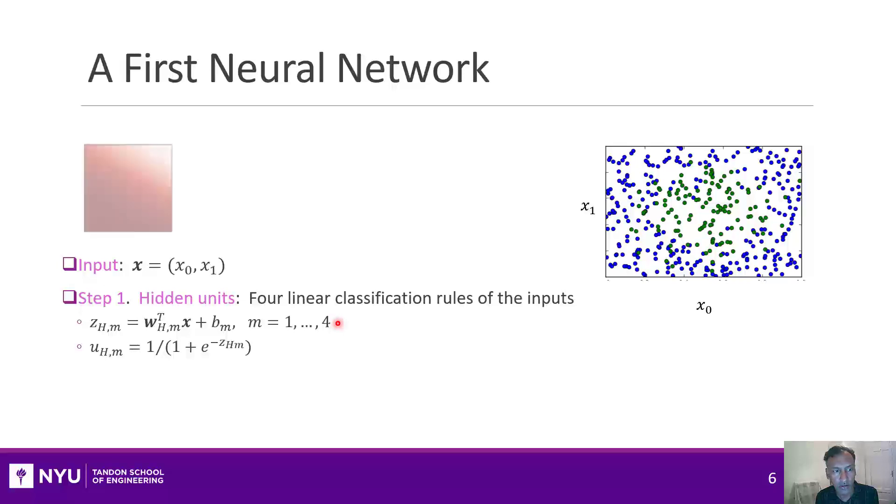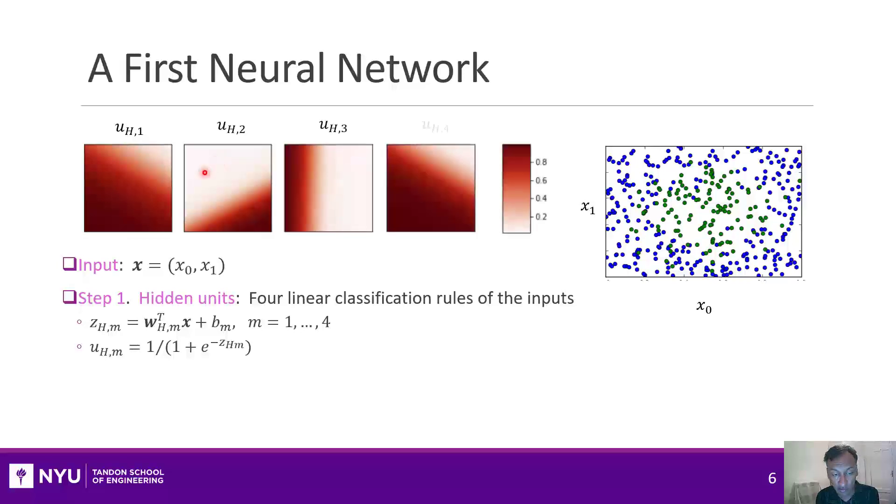What would this output look like? Well the first one could look like this, and you can see it's a value going from zero to one and it progresses along this linear region as we would expect a logistic output to look like. The next three could pick up other regions. If we look at these four together, we see that each one tells us something about the region that the point is in. This one tells you it's in the lower left, this one tells you it's in the lower right, this one tells you it's in the left, and so on.